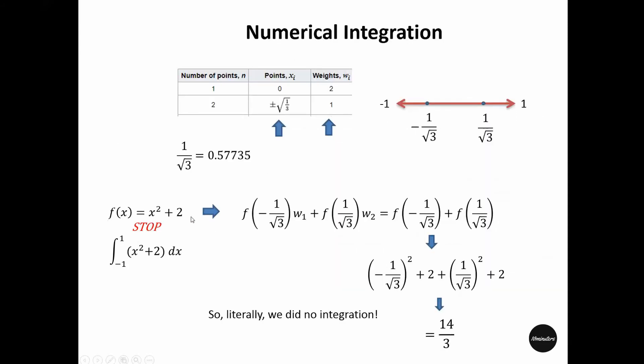Whereas the Gauss quadrature suggests if you want to integrate this function within this limit, you don't need to use the conventional calculus. Instead, you focus on these two quantities. In the number line, these two points, plus minus, would be this and this. And we also have this quantity weight, which is 1.